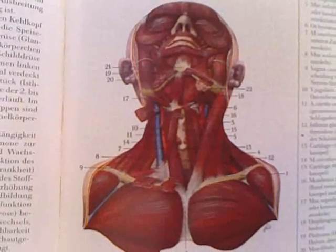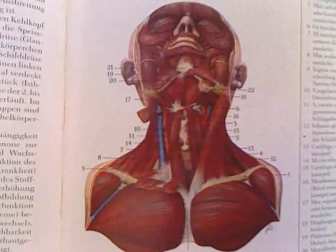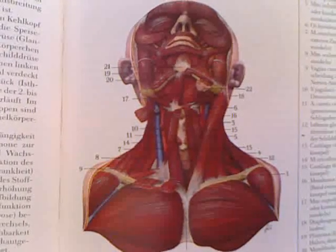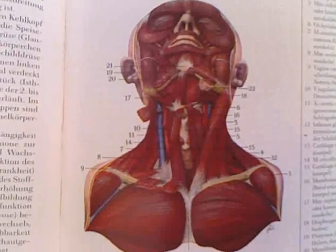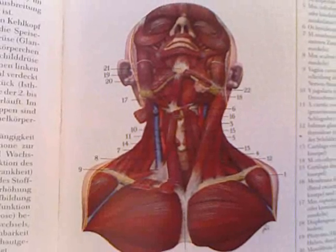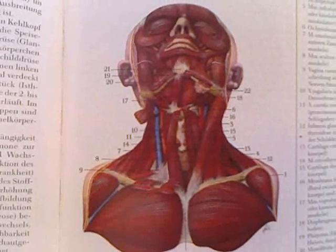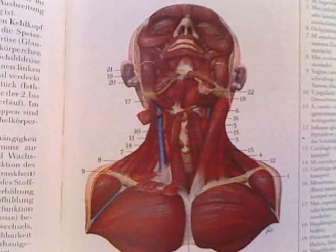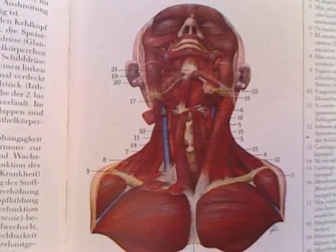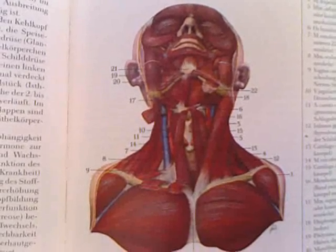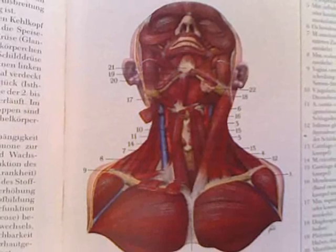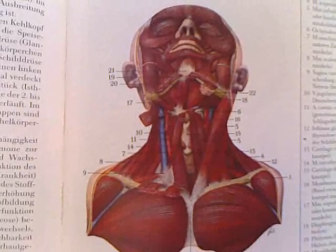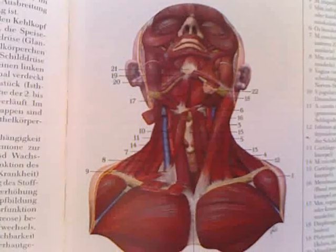Number 2 is the sternum. Number 3 is the sternocleidomastoid muscle. Number 4 is the trapezius muscle. Number 5 is the infrahyoid muscle.